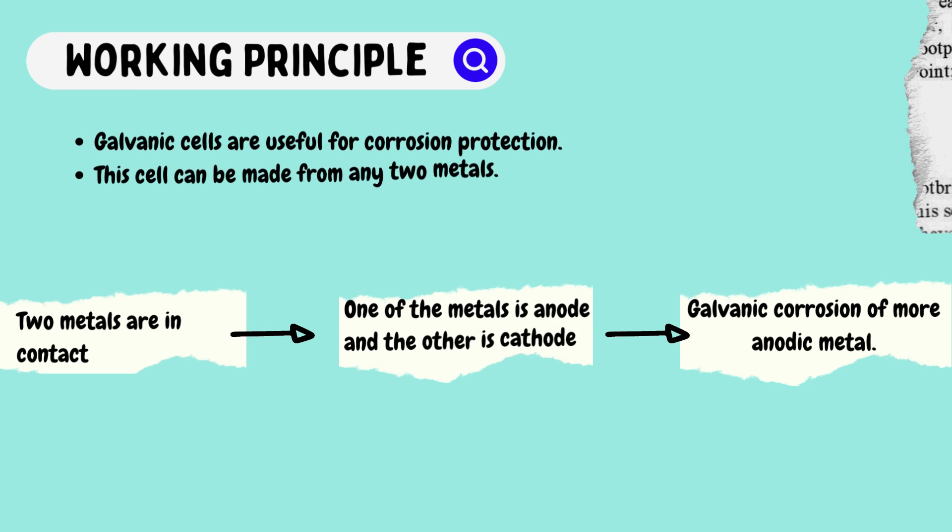Galvanic cells are useful for corrosion protection. This cell can be made from any two metals. When two metals are in contact, one of the metals will be the anode and the other the cathode, leading to galvanic corrosion of the more anodic metal.